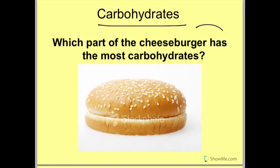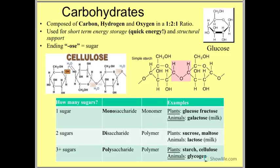What part of this burger do you think has the most carbohydrates? If you've ever heard of a low-carb diet, people like to avoid eating things like cheeseburgers because the bun has so many carbs. Now let's get to the nitty-gritty stuff about carbs. Carbs are composed of carbon, hydrogen, and oxygen in a one-to-two-to-one ratio. That means for every one carbon in a carbohydrate, there are two hydrogens and one oxygen. Carbohydrates are used for short-term energy storage, quick energy, and structural support.